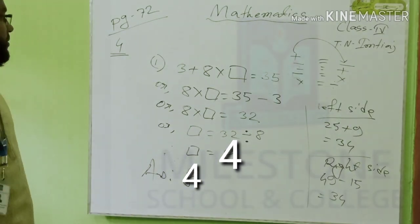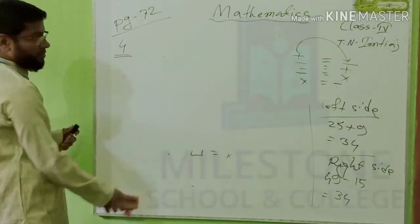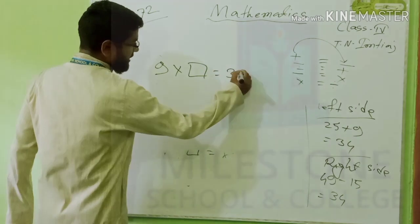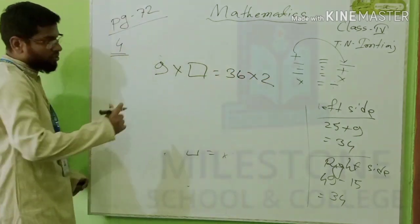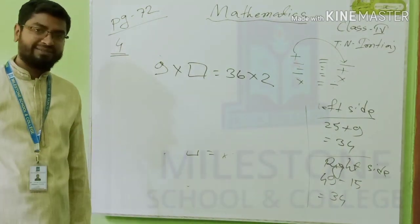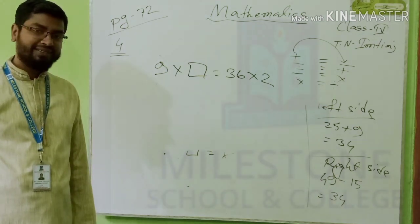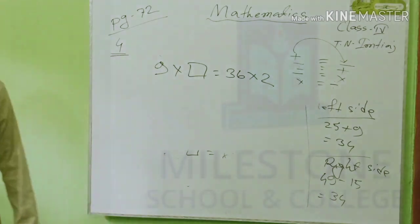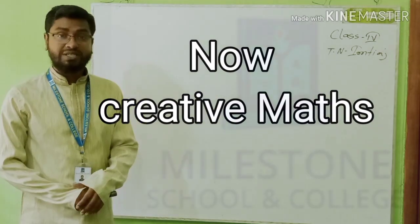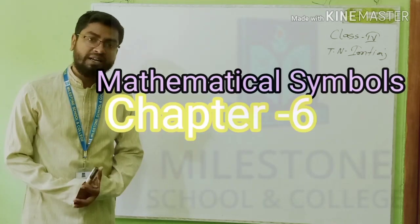Now I want to give you one math for solving. Solve it right now: 9 into blank equals 36 into 2. Solve it and tell me the answer in the comment. Now, Creative Math — which topic? Mathematical Symbol, that is in Chapter 6.